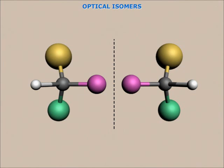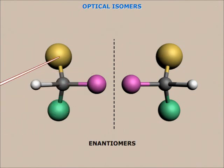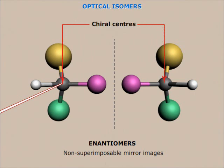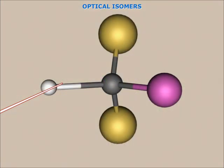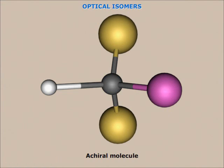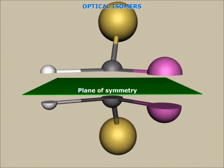How optical isomers arise. Optical isomers or enantiomers have molecules which have non-superimposable mirror images. They have four different groups attached to a carbon atom. These molecules are called molecules having chiral centers, or simply chiral molecules. Notice that when at least two groups attached to the carbon atom are identical, then the molecule is achiral and has a plane of symmetry. Chiral molecules have no plane of symmetry.